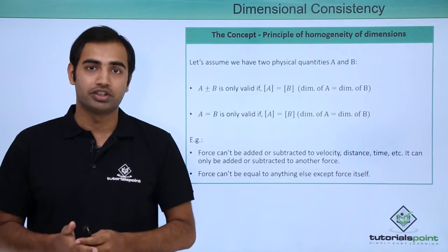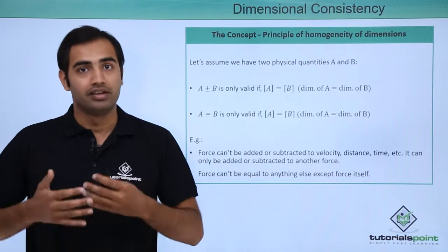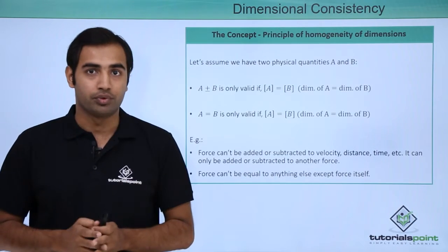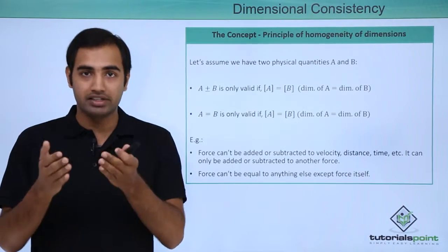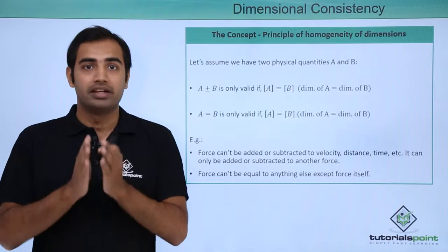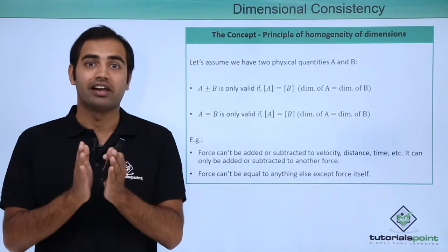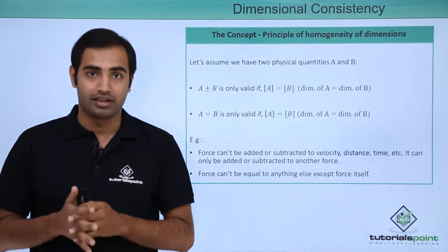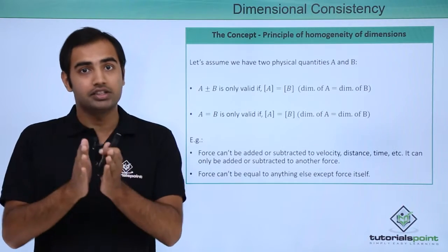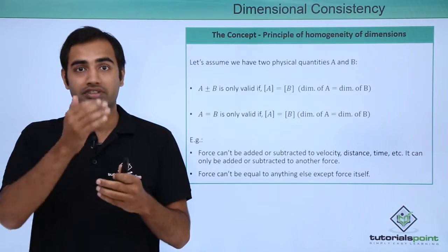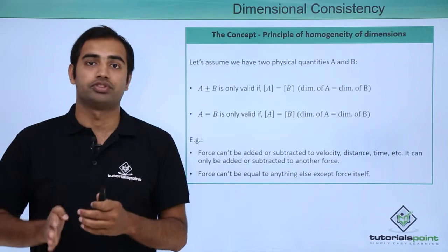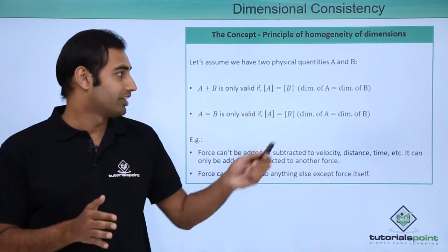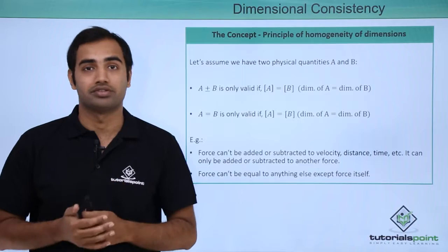Let's say we have two physical quantities, A and B. The addition and subtraction operations on these two physical quantities - which means A plus B or A minus B - is only valid if the dimensions of A are equal to the dimensions of B. Similarly, A equals B is only valid if the dimensions of A are equal to the dimensions of B.